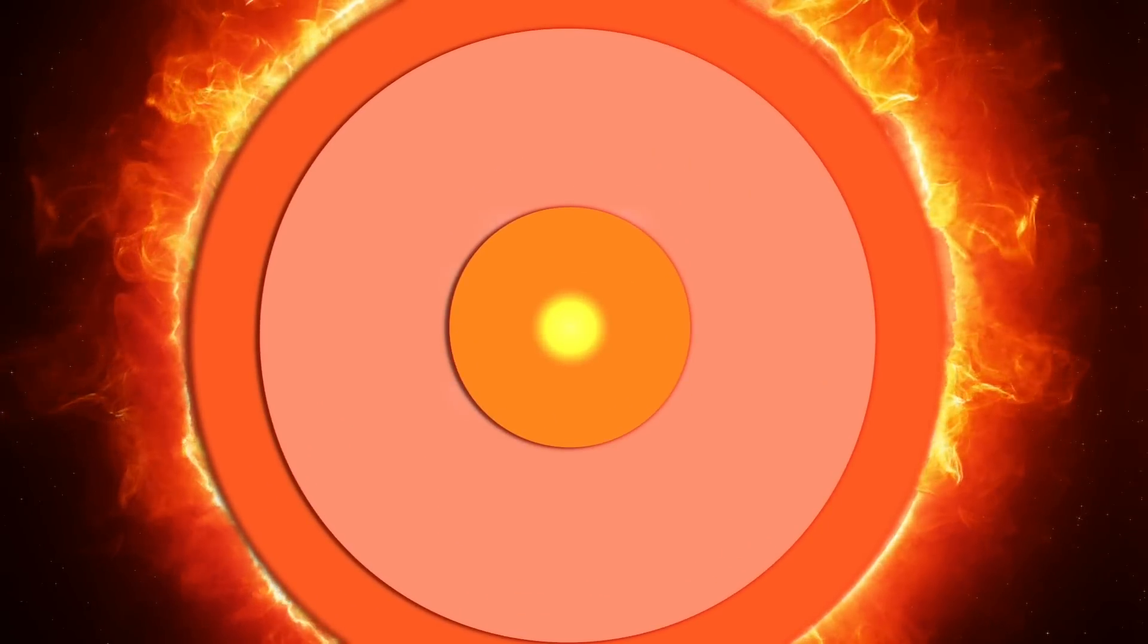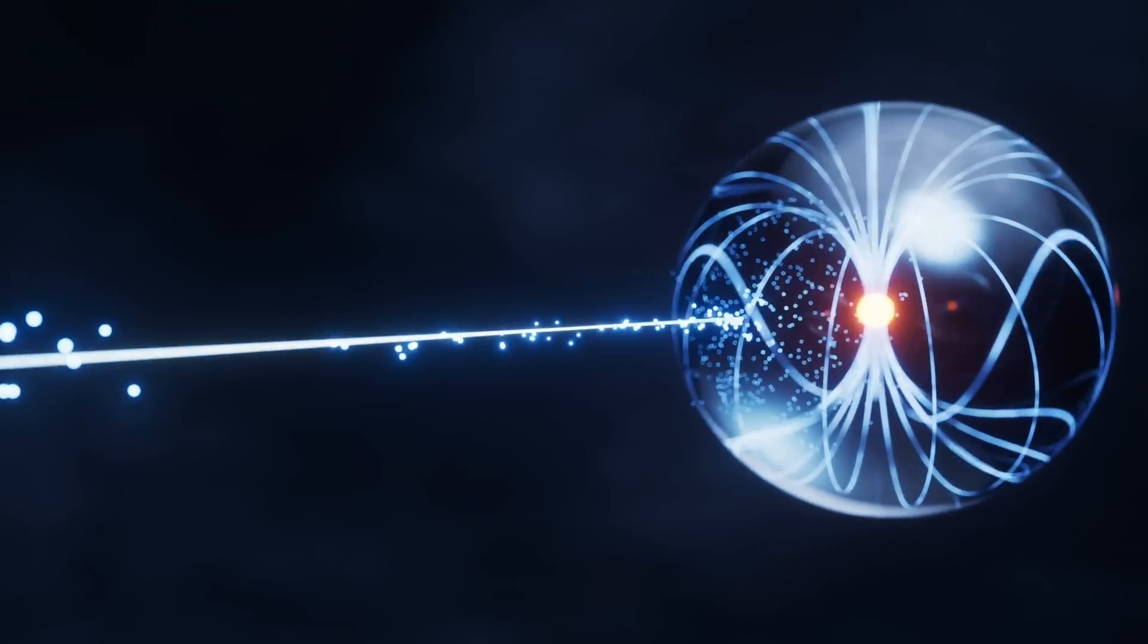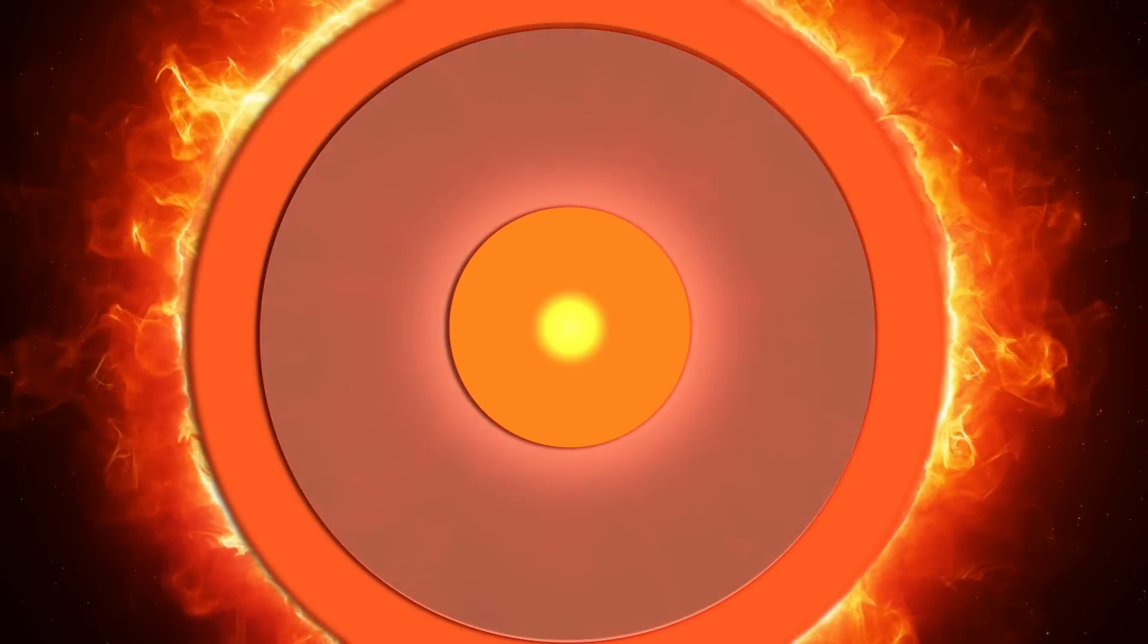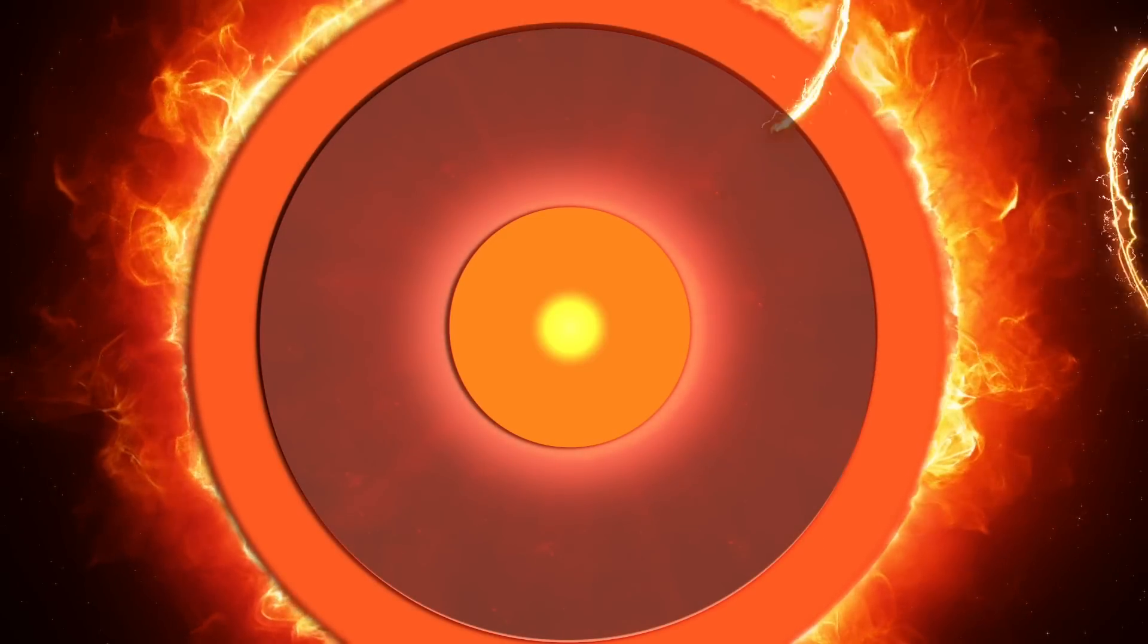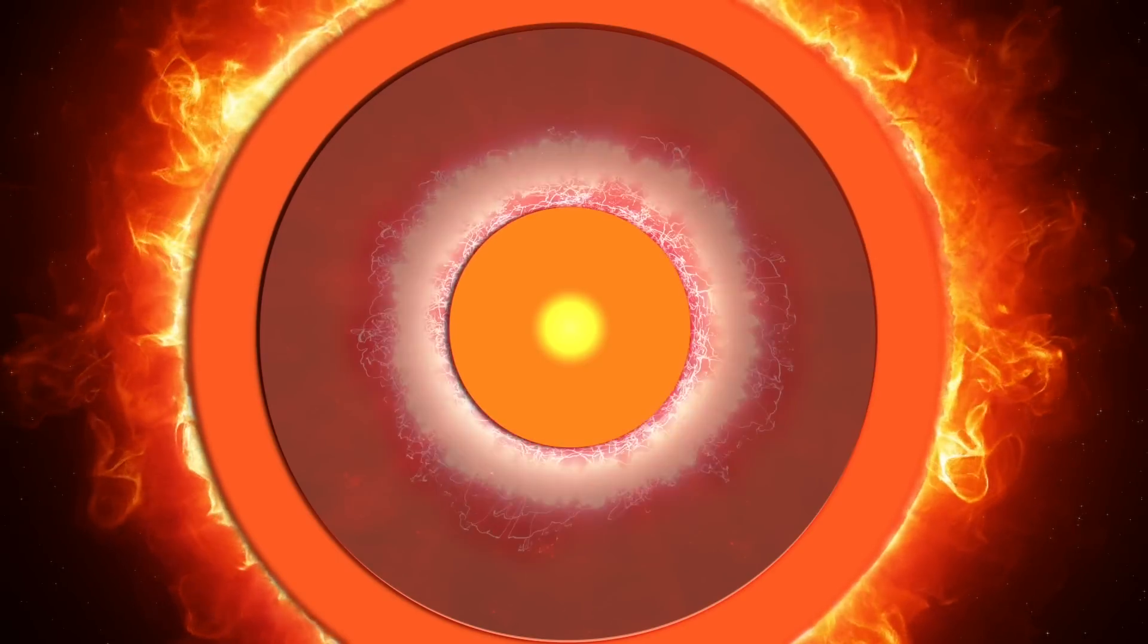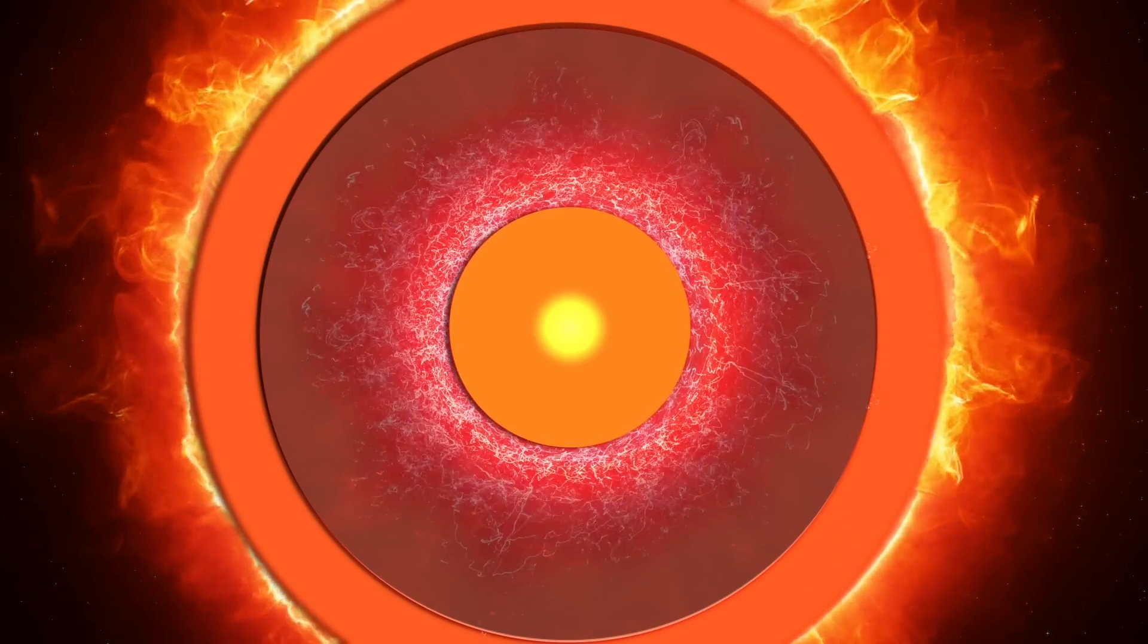The core is the Sun's innermost region, where nuclear fusion occurs, converting hydrogen into helium and releasing vast amounts of energy. Above the core lies the radiative zone, where energy is transported outward through radiation. In this region, energy moves slowly outward as photons are repeatedly absorbed and re-emitted by the solar plasma.